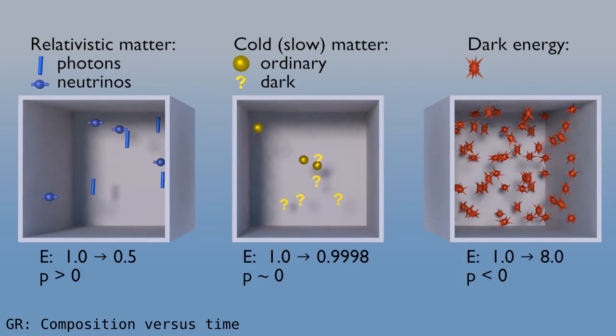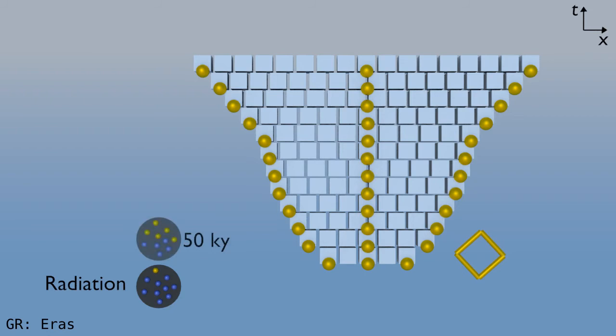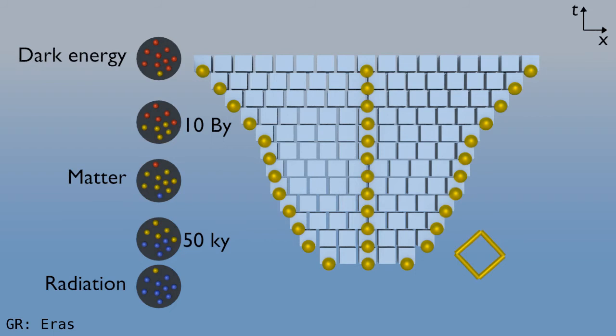To summarize, as time passes, radiation becomes less important, and dark energy becomes more important. So at early times, radiation dominated, then slow matter dominated, and then today, dark energy dominates.